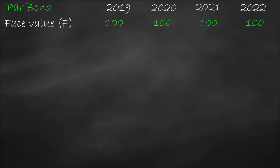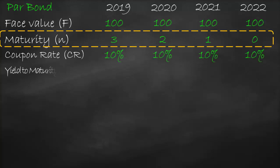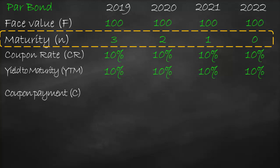Now let's apply the same concept for a par bond. We have the same years: 2019, 2020, 2021, 2022. Face value is 100. Maturity N: 3 in 2019, 2 in 2020, 1 in 2021, and 0 in 2022. Coupon rate is 10% and yield to maturity is also 10%, because for a par bond, coupon rate must equal yield to maturity. Coupon payment is 10% times 100, which equals 10 every year.